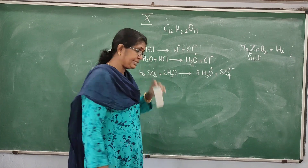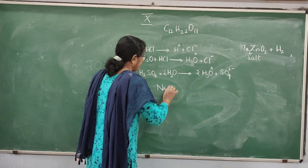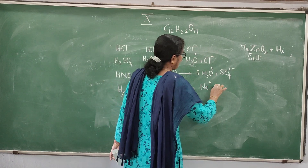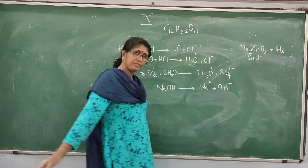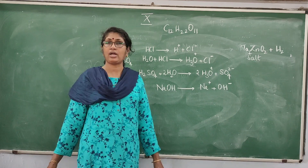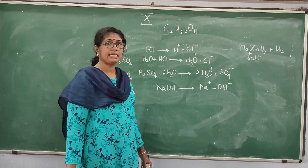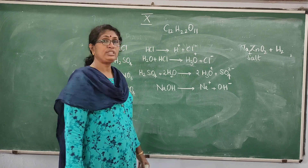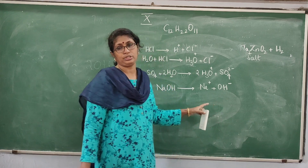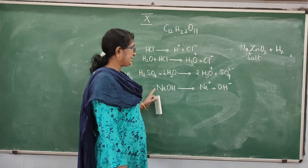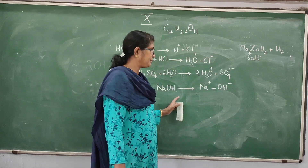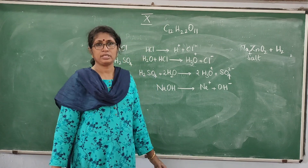Now, what are bases? Sodium hydroxide, when added to water, will split into Na+ and OH−. It splits into sodium ions and hydroxide ions. So bases, or alkalis, are substances which give OH− hydroxide ions in solution. Acids are substances which give H+ ions in solution, and bases are substances which give OH− ions in solution.